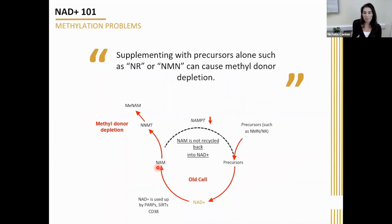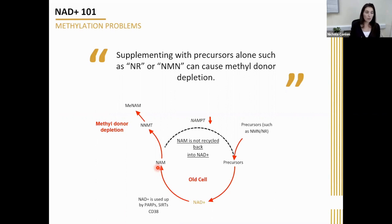This is why many practitioners will tell clients they need to use trimethylglycine or something similar to stop these negative effects, because a depletion in methyl groups is actually really bad for epigenetics — methyl groups are very important for altering the structure of your DNA.